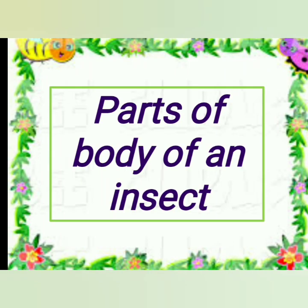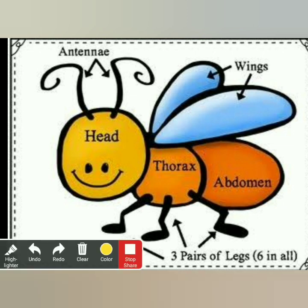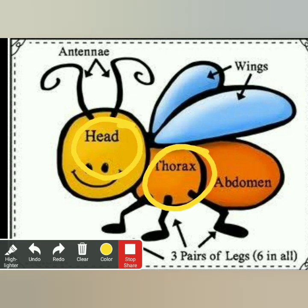Now let's look at the parts of the body of an insect. The body of an insect is divided into mainly three parts.